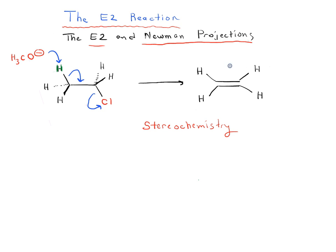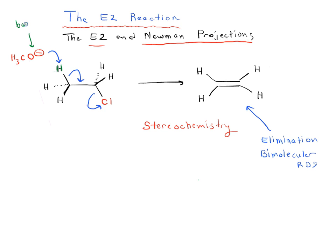Before we go into too much detail on Newman projections, let's just remember what exactly the E2 reaction is. It is an example of an elimination reaction, which means that we're going to be forming an alkene. The '2' refers to the fact that the rate-determining step is bimolecular. The two species involved are the base, which is CH3O-, and our substrate.